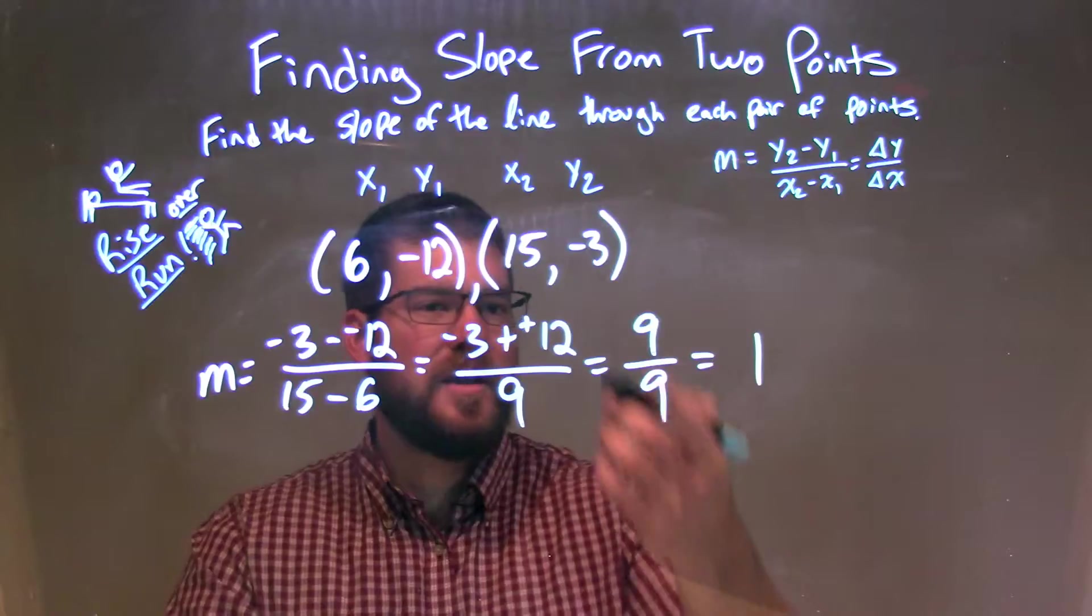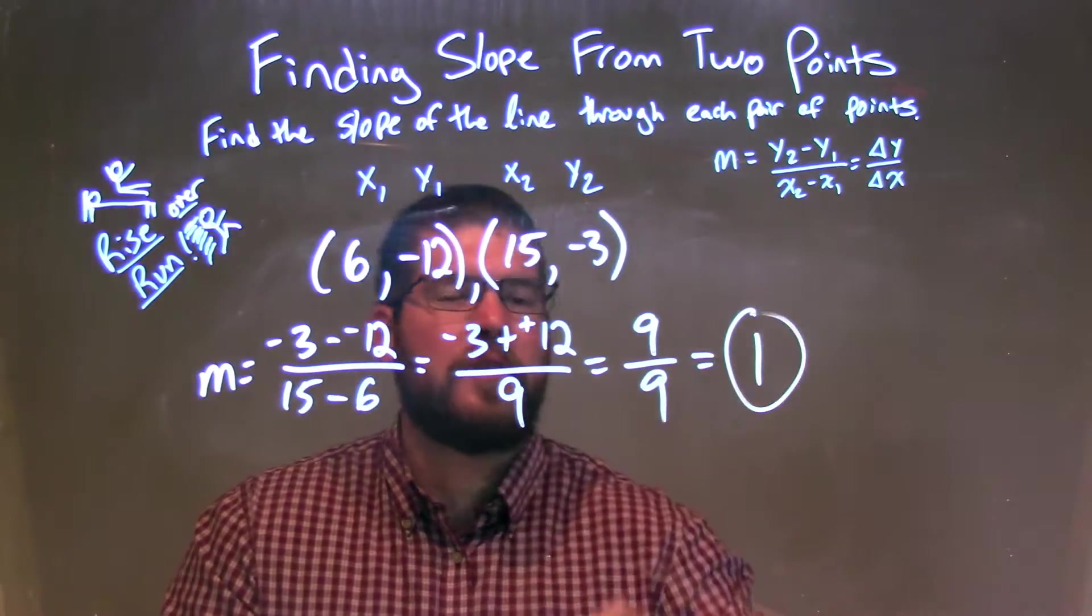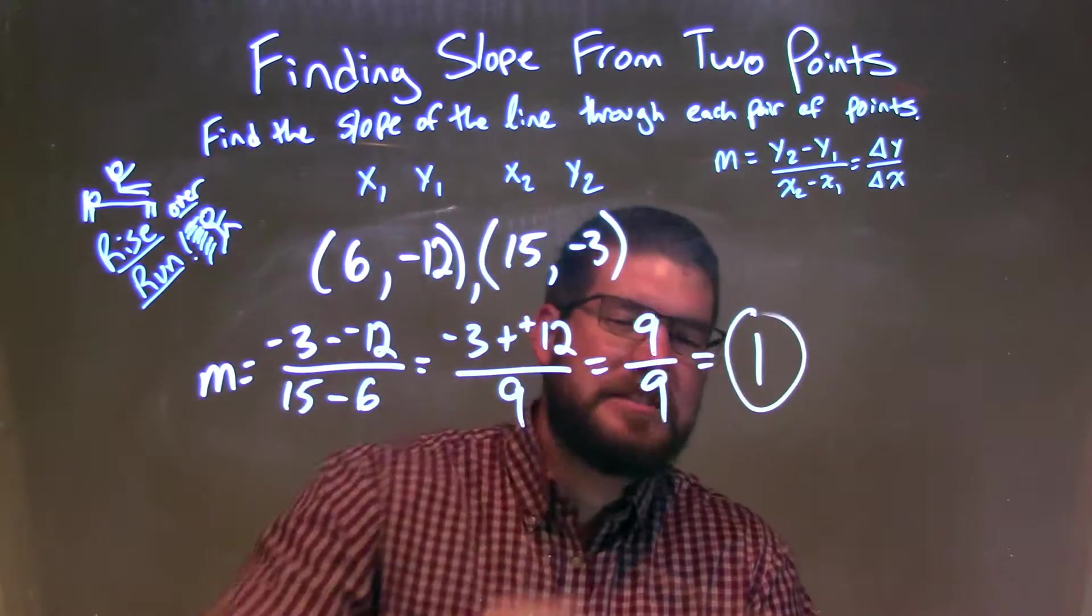And then we have it. Pretty easy, right? 9 over 9 is just 1, that's our slope, that's our final answer, and it's the slope between these two points, which is just 1.